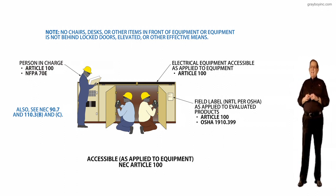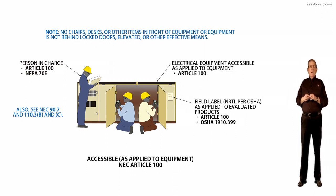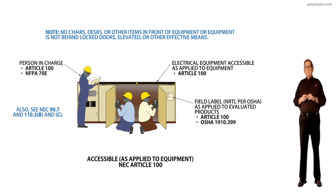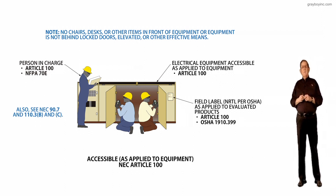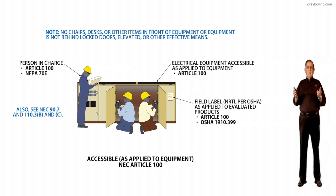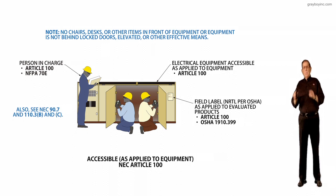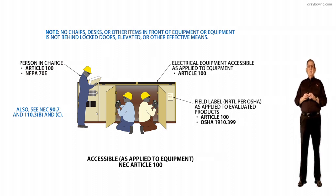Then you'd look up 'identified,' which goes into how equipment would be accepted according to the informational note. There are examples given of how equipment would be accepted according to a non-classified area. If you get into classified areas, you'd go to 500.3A1, and that goes through your procedure for accepting equipment.